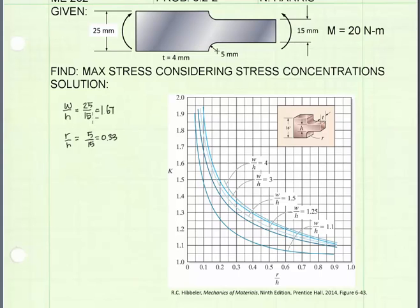The ratio R over H: R is the fillet radius which is 5 mm, and H is the smaller height dimension which is 15, and that ratio gives us 0.33.